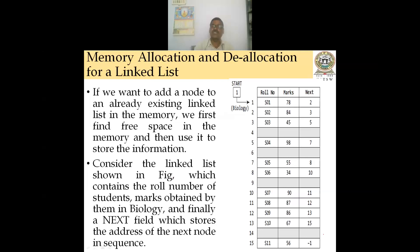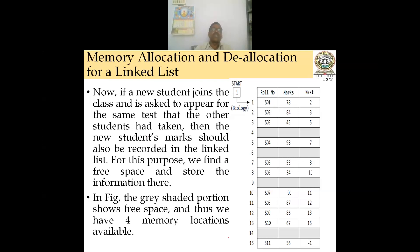This linked list already stores roll numbers S01 to S11 with student information. It contains the role numbers of students, marks obtained in biology, and a next field storing the address of the next node in sequence. Now, if a new student joins the class and takes the same test, the new student's marks should also be recorded in the linked list.